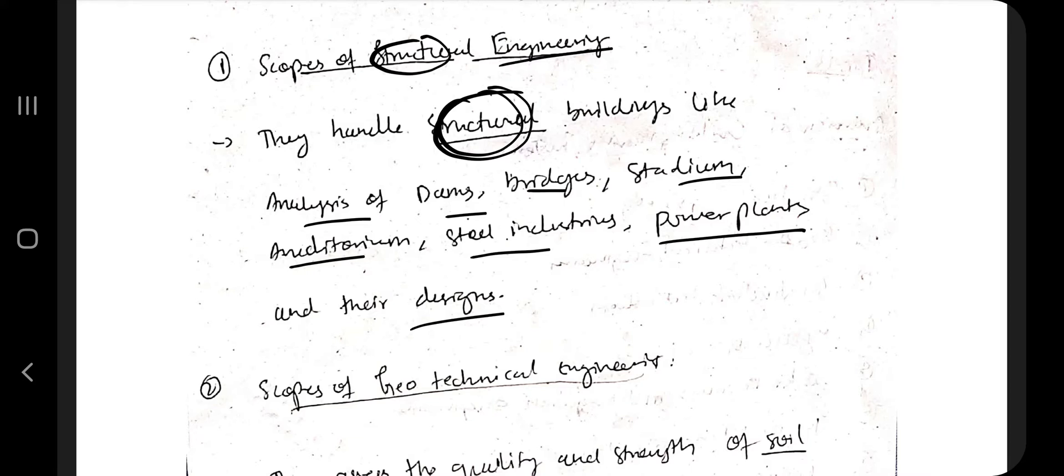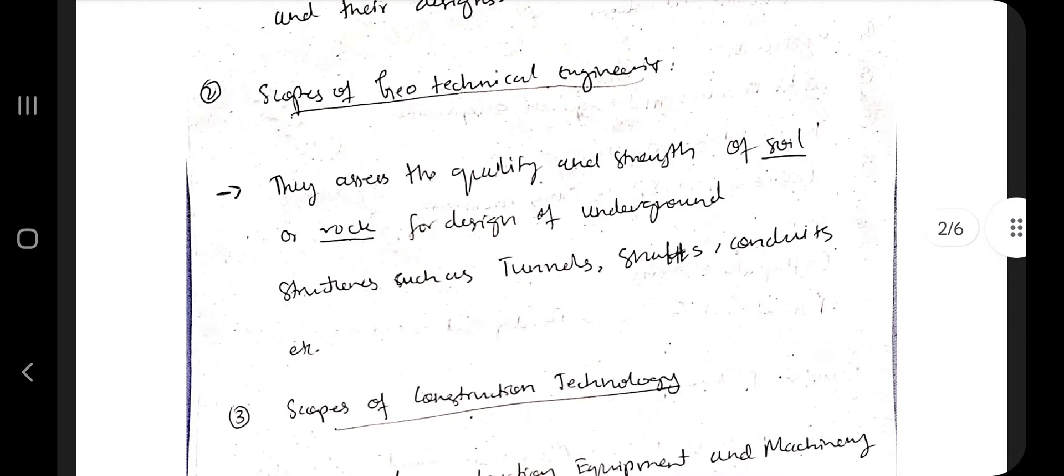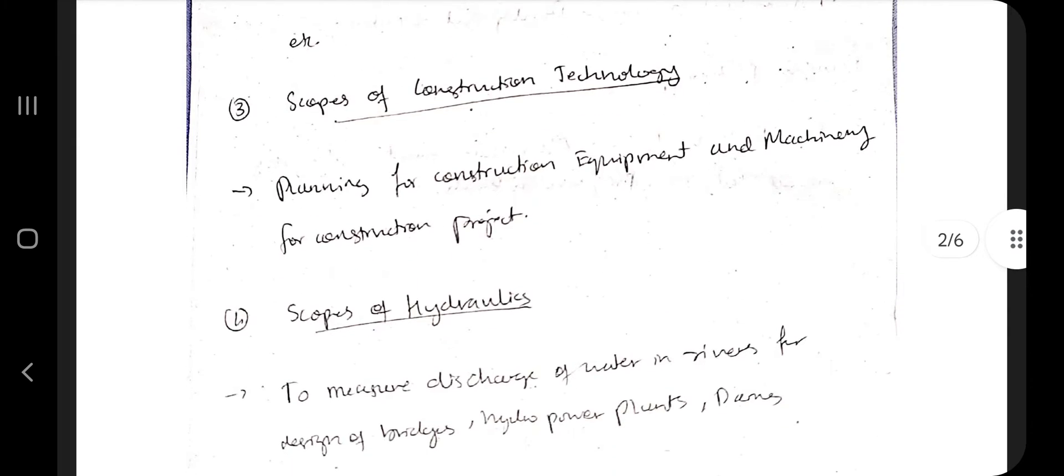Next is geotechnical engineering. The civil engineers under this engineering will be assessing the quality and strength of the soil and rock for the design of underground structures like tunnels, shafts and conduits. Third is construction technology where planning for construction equipment and machinery for the construction project is carried out.